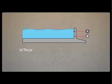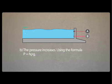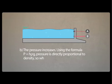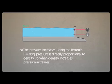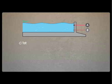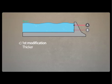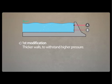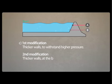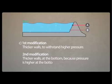For part B: if the density of water is higher, what will happen to the pressure at the bottom of the reservoir? The pressure increases. Using the formula P equals H rho G, pressure is directly proportional to density. Therefore, when density increases, pressure increases. For part C, the first modification is that thicker walls should be built to withstand higher pressure. The second modification is that the bottom part of the wall should be even thicker, because the pressure at the bottom is even higher.